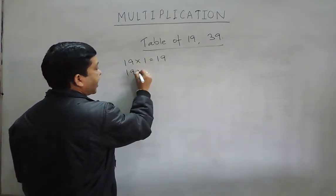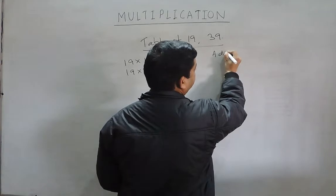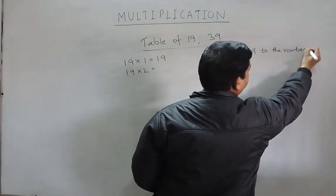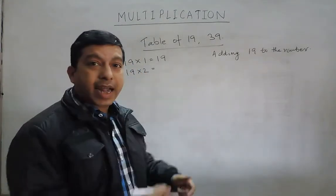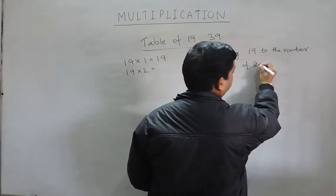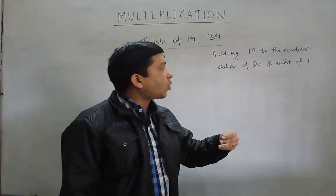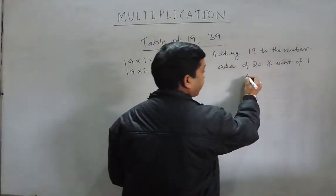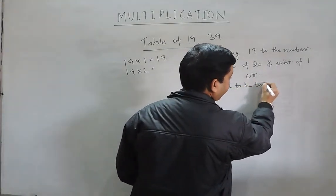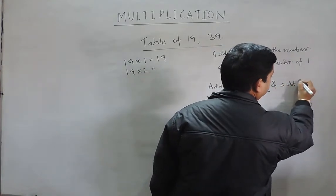When I say 19 into 2, as I told you, this is the repeated addition of a number. Adding 19 to a number is equal to adding 20 and then subtracting 1. Further, I can say: add 2 to the tens place — because adding 20 is adding 2 to the tens place — and then subtract 1 from the units place.